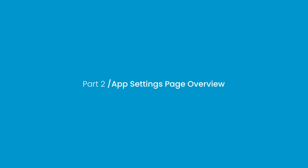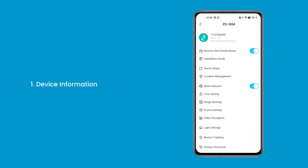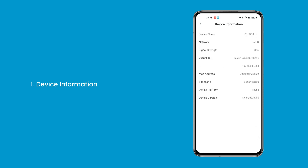Part 2: App Settings Page Overview. 1. Device Information — you can retrieve the fundamental information of the device on this page.